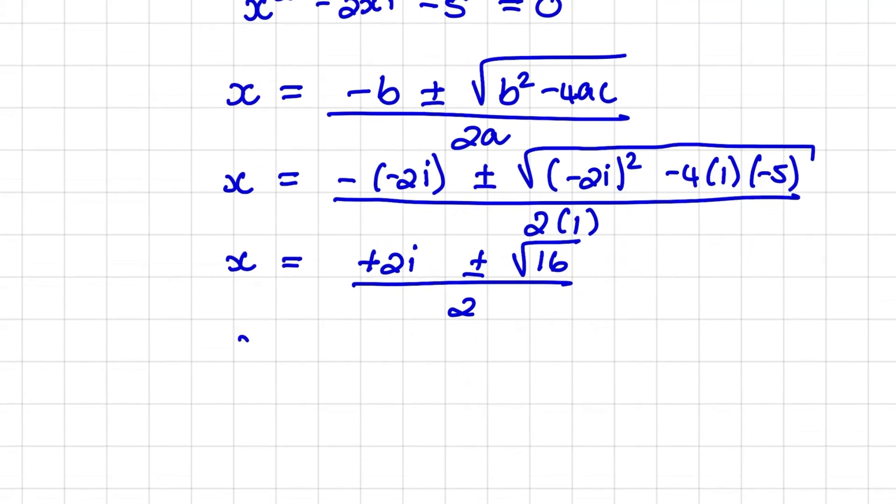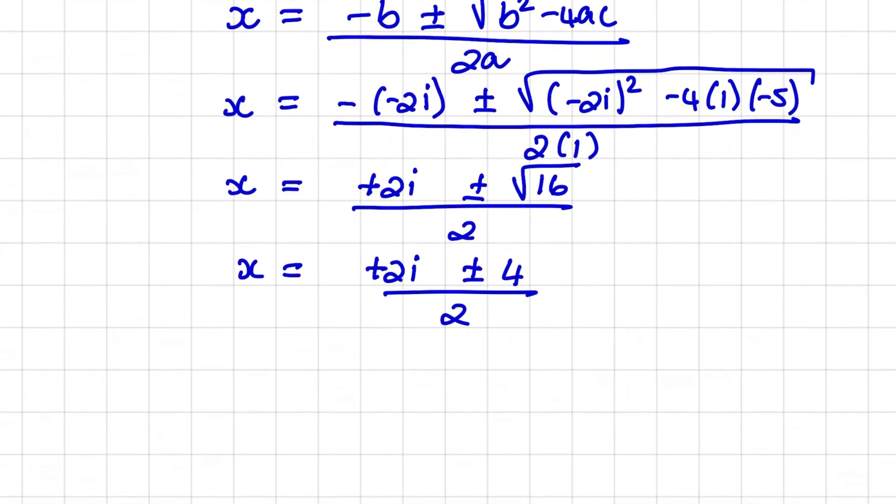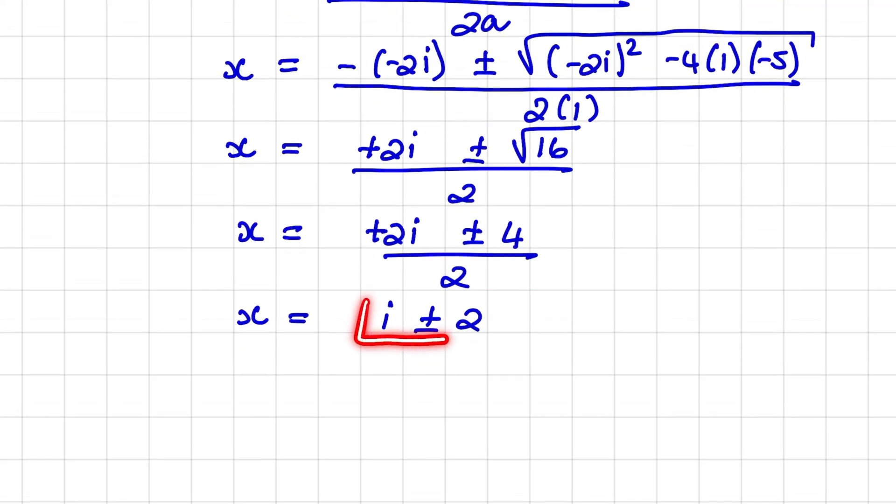So therefore, x is equal to plus 2i plus or minus 4 divided by 2. Now I can divide everywhere by 2. So that is, x is equal to i plus or minus 2. But normally, we will present our complex numbers by placing the real value first and the imaginary part second. So we'll have x is equal to plus or minus 2 plus i.